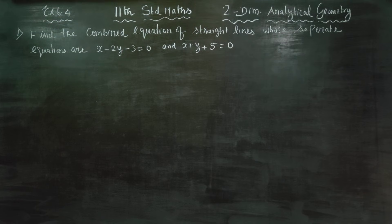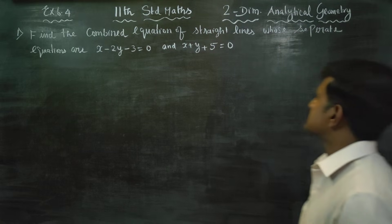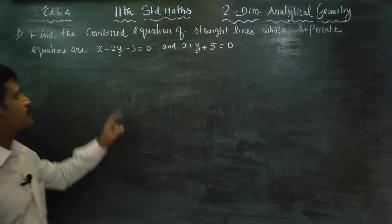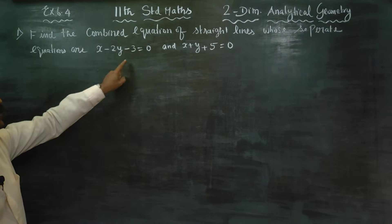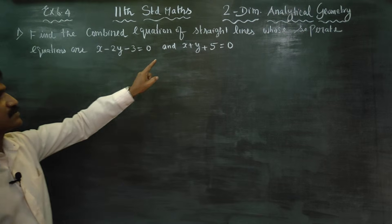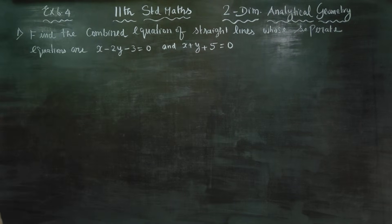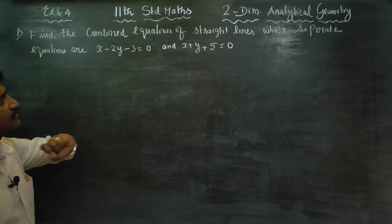Dear 11th standard students, in Exercise 6.4, sum number 1: find the combined equations of the straight lines whose separate equations are x minus 2y minus 3 is equal to 0 and x plus y plus 5 is equal to 0. Find the combined equations.